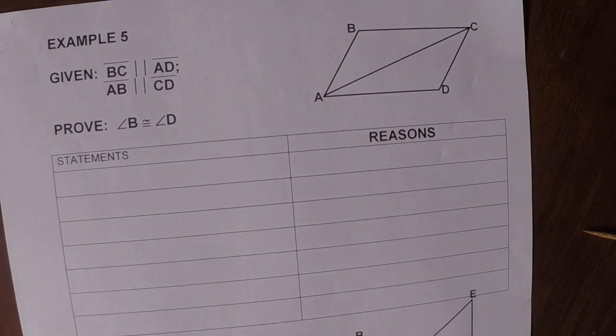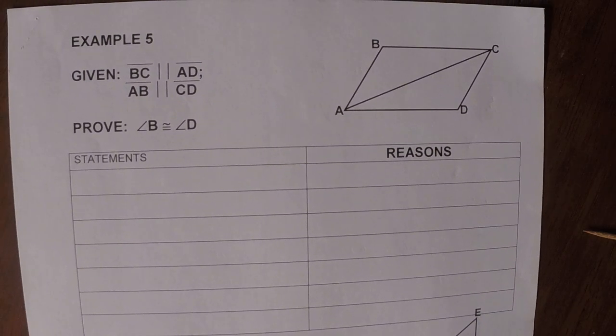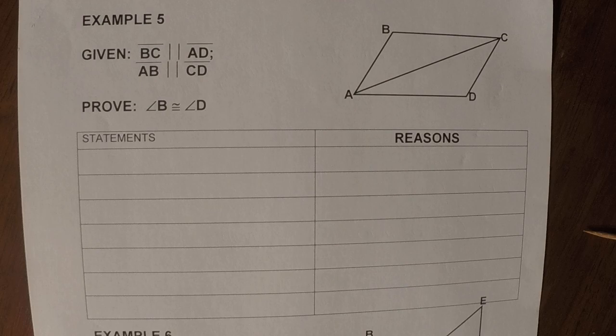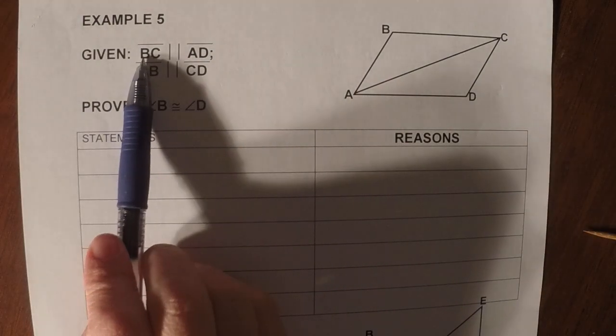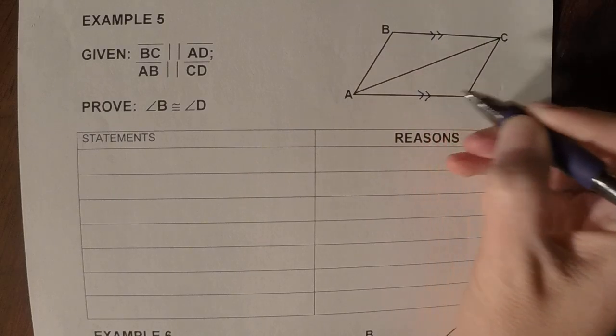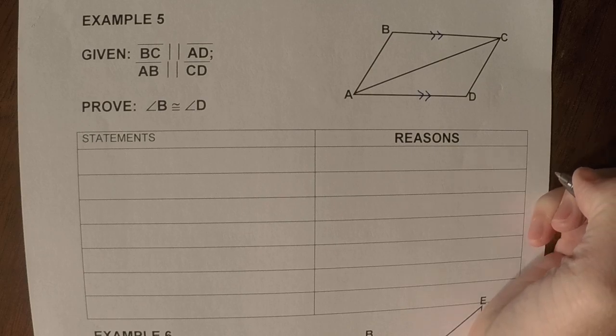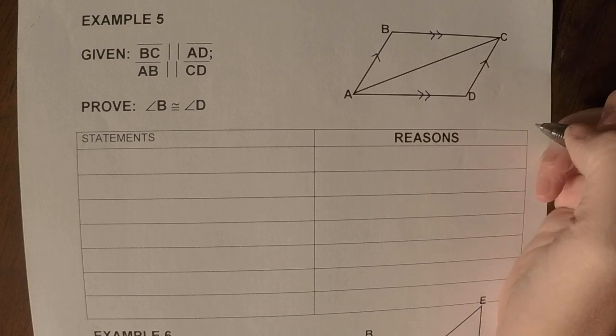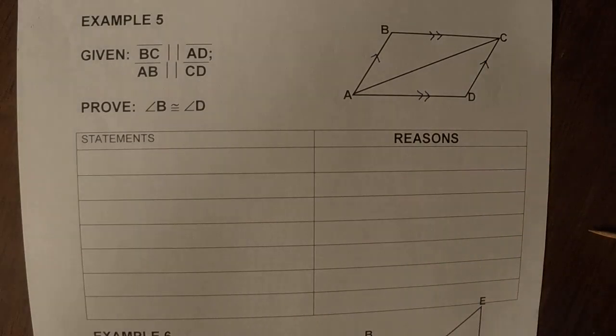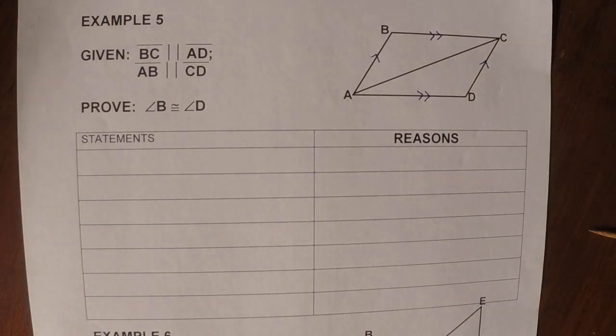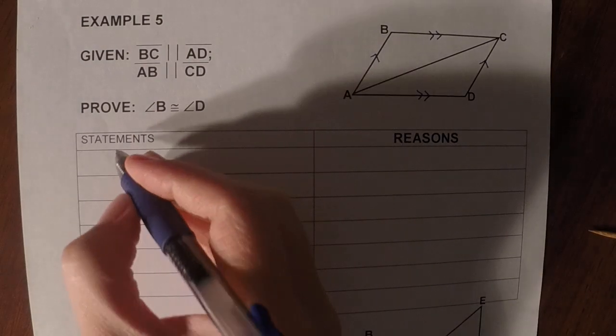But I want to do example five with you. So the first thing, we've got BC, this one right here, is parallel to AD, this one right here. And then we have AB, this one, parallel to CD, which is this one. So the parallels seem to be the ones that you guys struggle with the most just because you don't remember your alternate interior angles and those kinds of things. So I kind of wanted to go over this one with you.